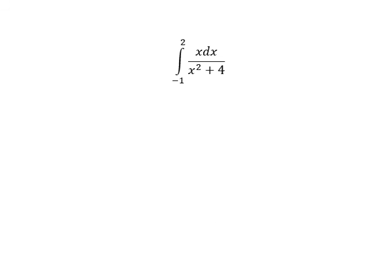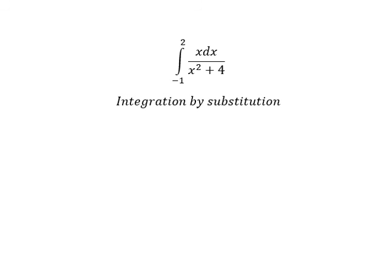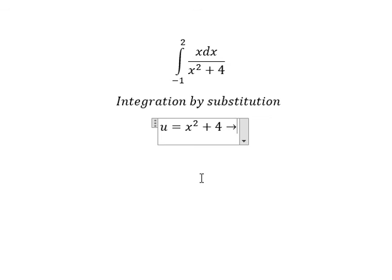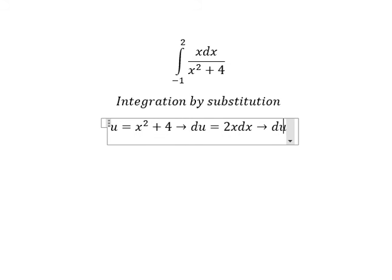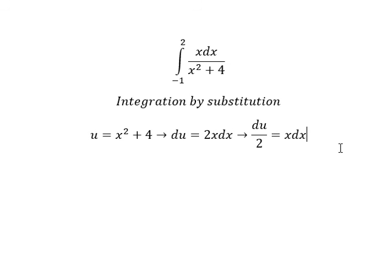The last one: we need to use integration by substitution. I will put u equals x squared plus 4. Then we do the first derivative for both sides and we have 2x dx. Because we don't have number 2, we need to divide both sides by number 2.